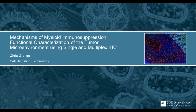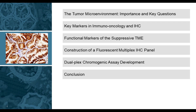Thank you for that introduction, Alexis, and thank you everyone for joining us today. I'm going to talk about mechanisms of myeloid immunosuppression and how we can functionally characterize the tumor microenvironment using single and multiplex IHC. As an agenda for today: I'll discuss why the tumor microenvironment is so important and some of the key questions surrounding it, briefly cover key markers in immuno-oncology, then two important functional markers of the myeloid suppressive TME, followed by construction of a fluorescent multiplex IHC panel, optimization of a dual-plex chromogenic assay, and then questions at the end.